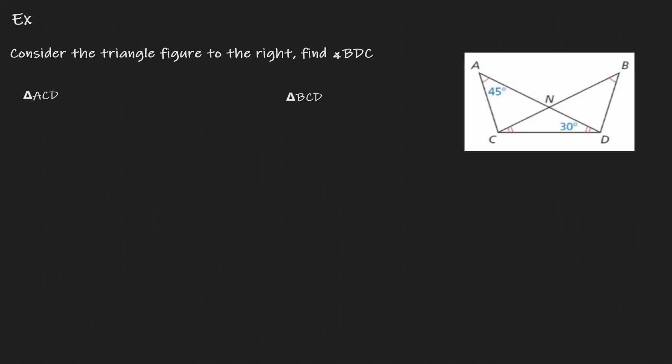Let's consider the triangle on the right and try to find out the value of angle BDC. Let's start by identifying angle BDC. Here's B, here's D, and here's C. So this is the angle that we want to find information about. How can I identify the value of this angle?